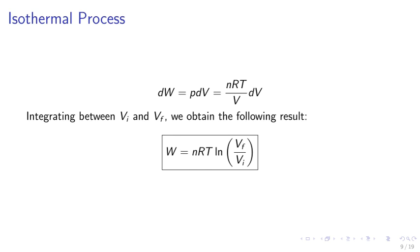For an isothermal process, temperature is constant. We may treat the volume as changing, however. And if we integrate between the initial and the final volume, we obtain the following result for the work done: W equals NRT LN of VF over VI.